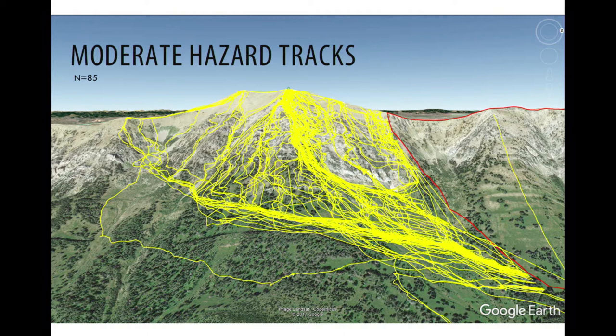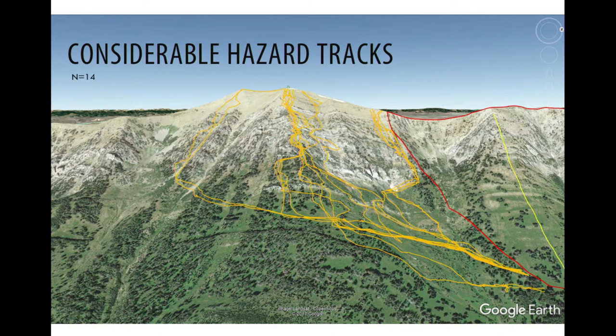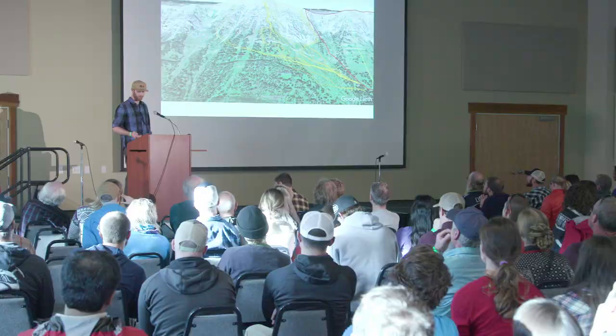Our considerable hazard tracks obviously have a lot less data — we're working on that for next year. But they also seem a little more clustered, especially around one run and the football field. More data would help our analysis, so we're going to be back out there this winter to get more data and see what people are doing.